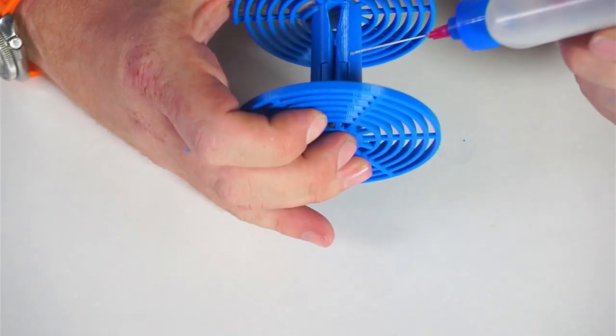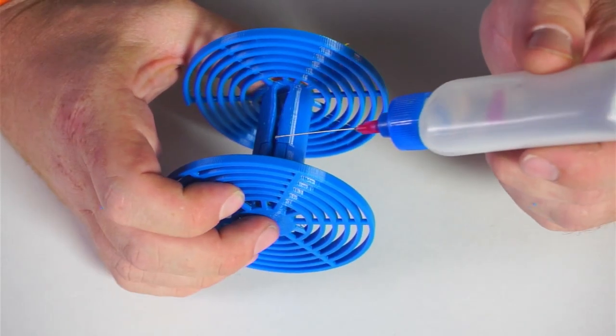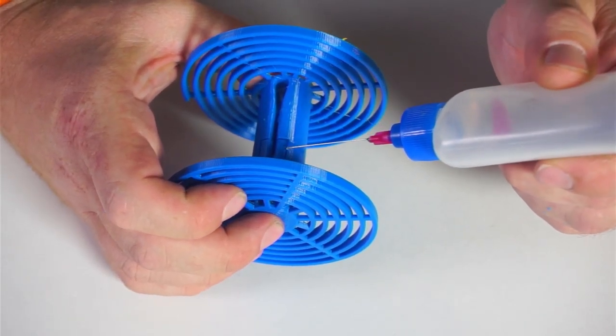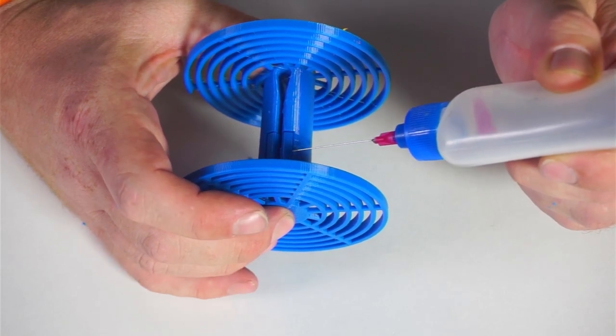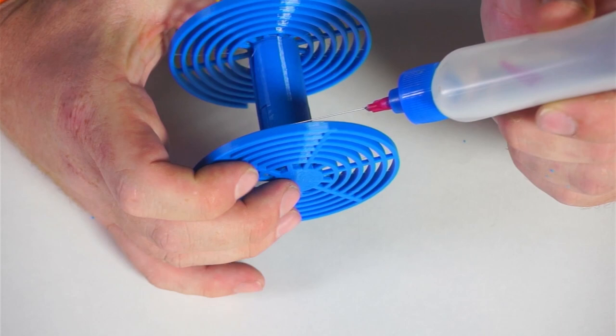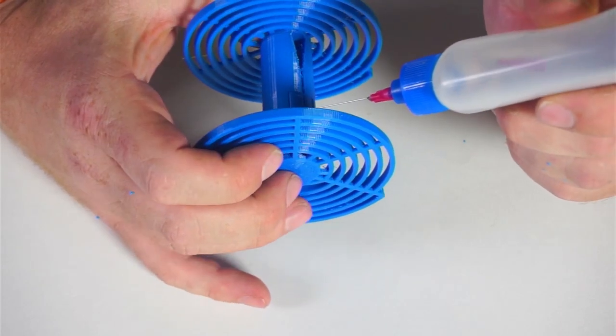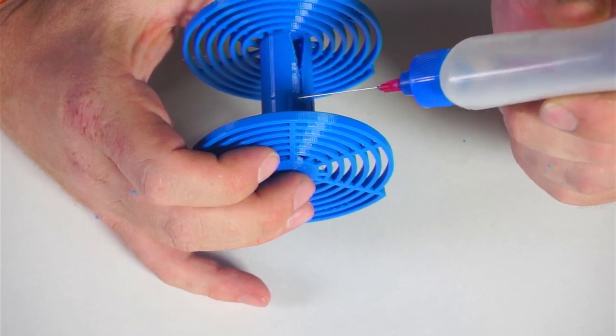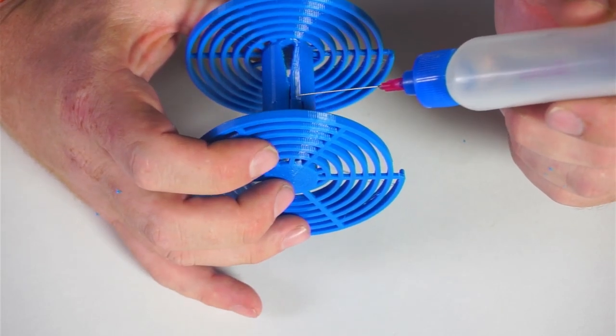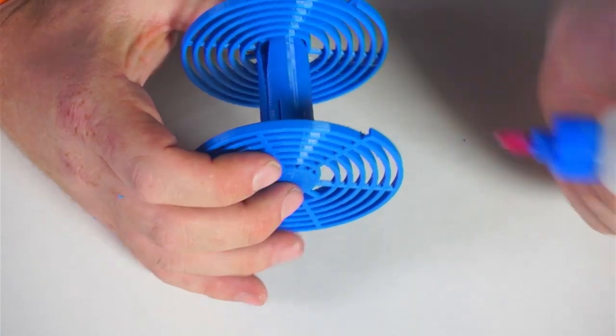And then pour some glue in there. This is Weldon 3. It's an acrylic solvent, but it also works on PLA great. And what's nice about it, particularly for developing tanks, is that when it's done, there's no solvent left. It's not a glue. It just melts the two pieces of plastic together. So you're just left with PLA when you're done.